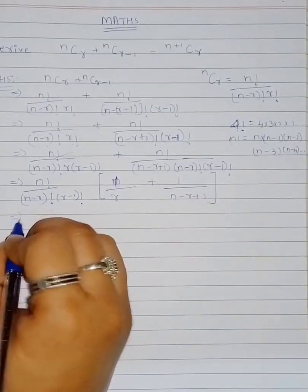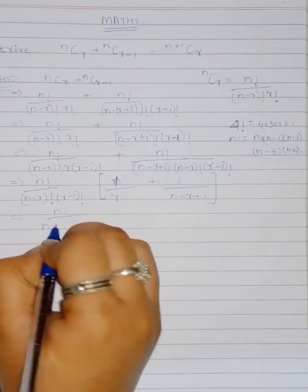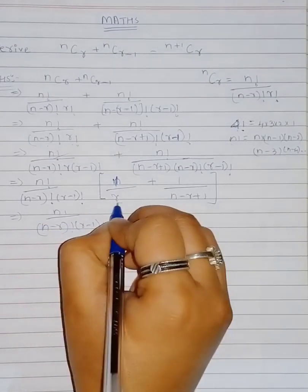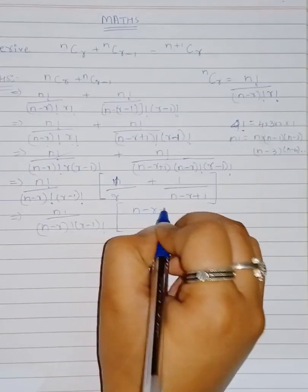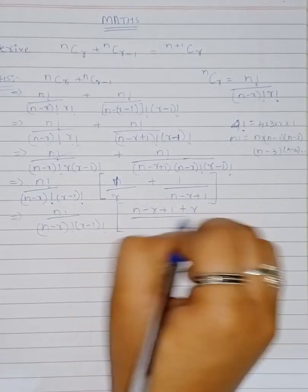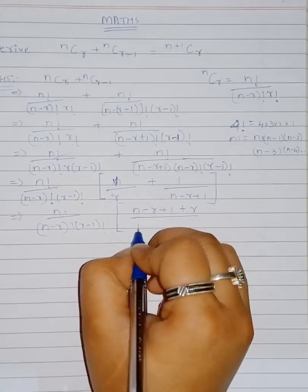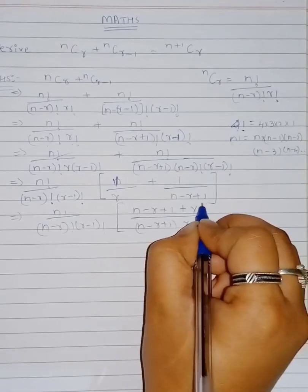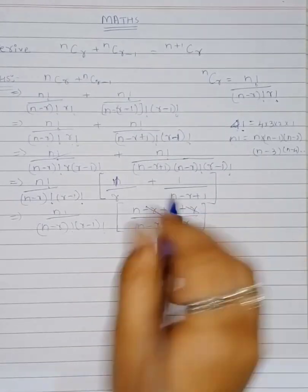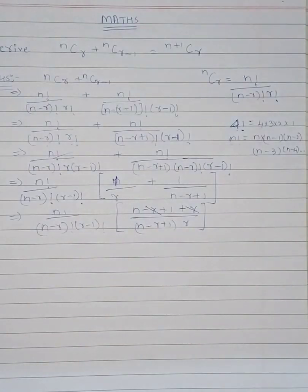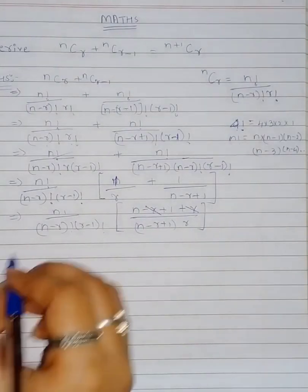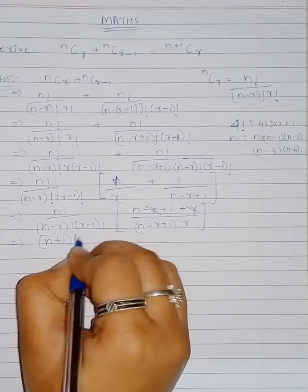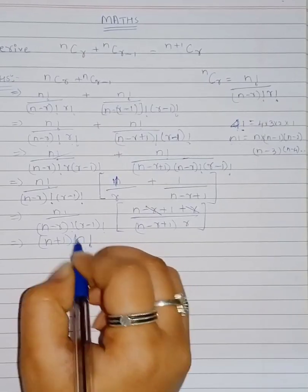Taking LCM inside the bracket, we get [(n−r+1) + r] / [(n−r+1) · r]. The +r and −r cancel inside the numerator, leaving n+1. So the result becomes n! · (n+1) / [(n−r+1)! · r · (r−1)!].